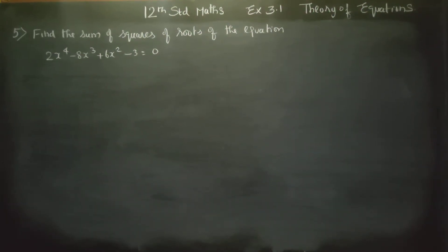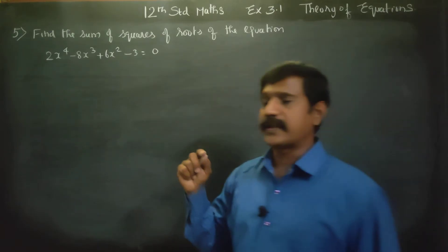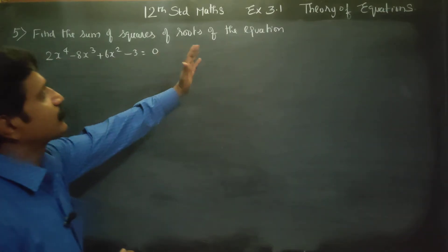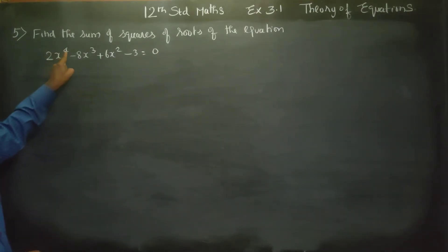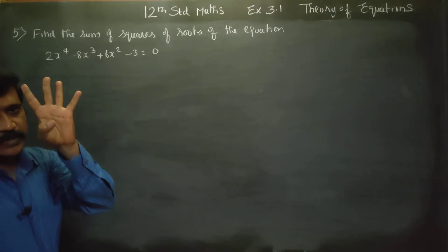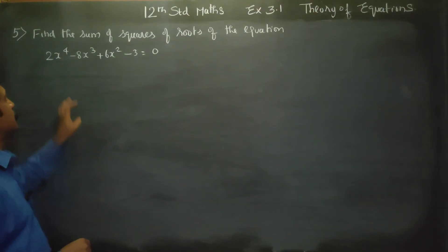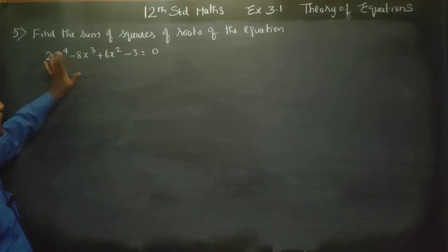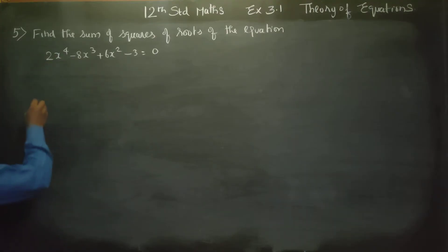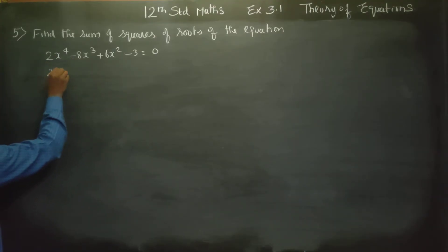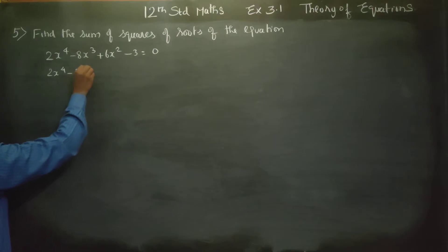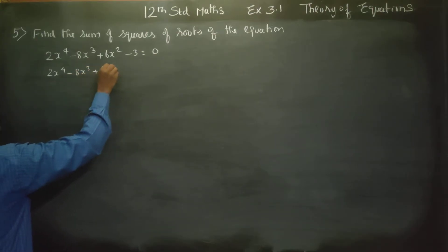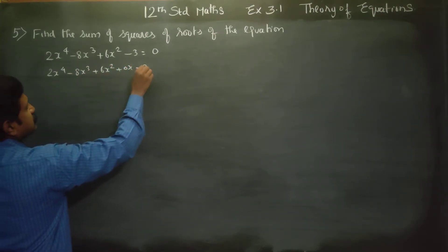Hello Class 12 standard students. In exercise 3.1, sum number 5, find the sum of the squares of the roots of the equation. The equation is 2x power 4 minus 8x cube plus 6x square plus 0x minus 3 equal to 0.